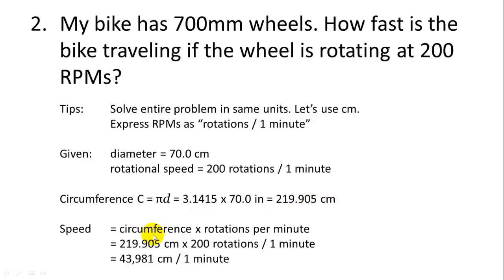Next, we can calculate the speed as the circumference times the rotations per minute. So 219.905 centimeters is how far the wheel travels in one rotation. And it's doing 200 rotations per one minute. So if we multiply 200 rotations times the distance it travels in one rotation, we get 43,981 centimeters per one minute. That's our speed, but we might want to simplify that.